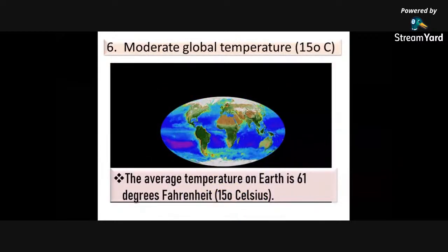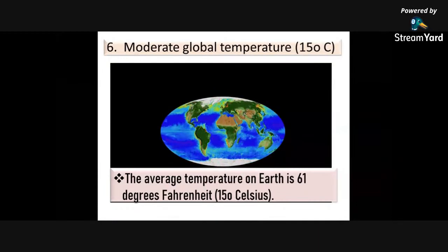Next is moderate global temperature. The average temperature on Earth is 61 degrees Fahrenheit or 15 degrees Celsius.